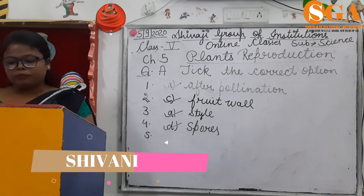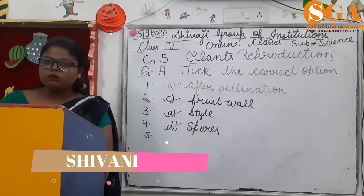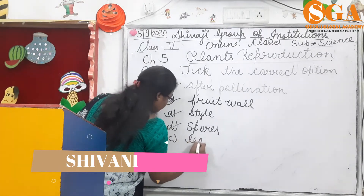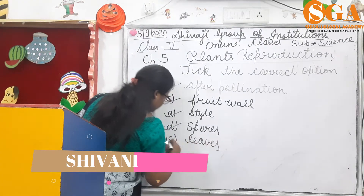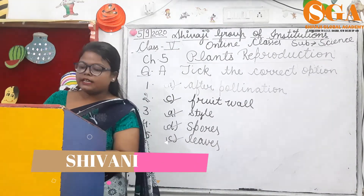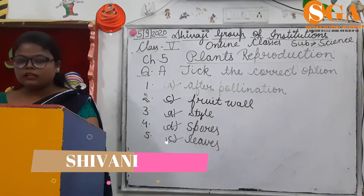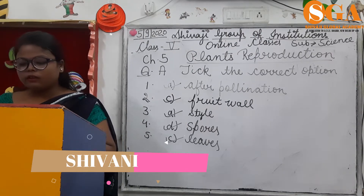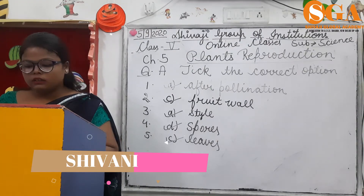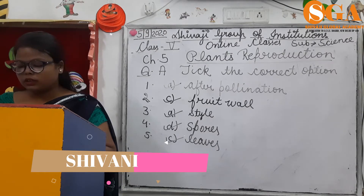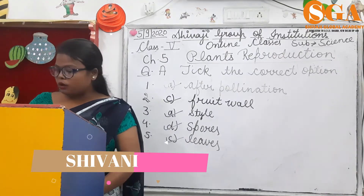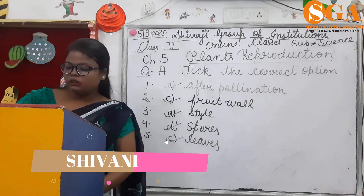Fifth: reproduction of bryophyllum occurs through leaves. I will repeat this exercise. Fertilization occurs after pollination. The ovary of a flower develops into a fruit wall. Pollen tubes grow downwards into the style. Plants like fern reproduce from spores. The reproduction of bryophyllum occurs through leaves.